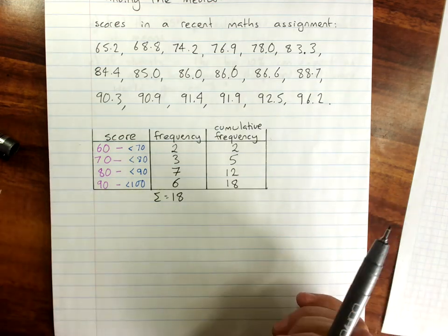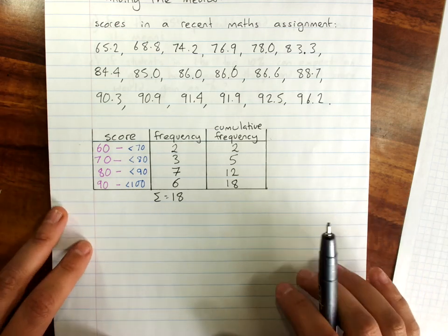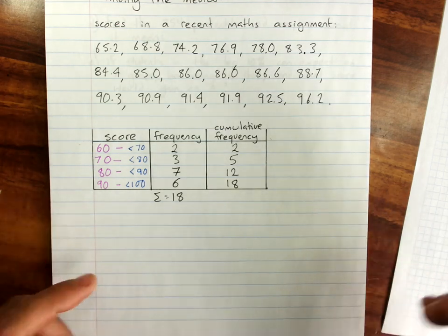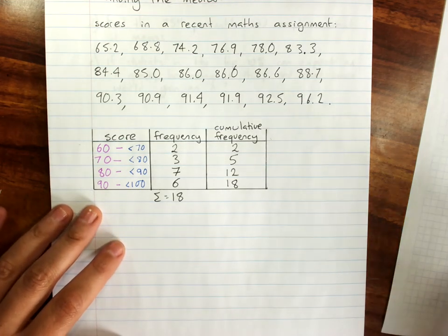Now, a very useful strategy is making something called a cumulative frequency ogive. It's an odd word. It sometimes used to be called a polygon.